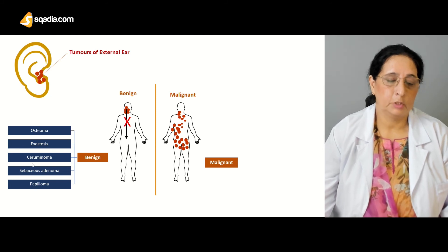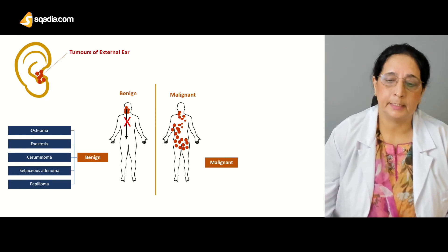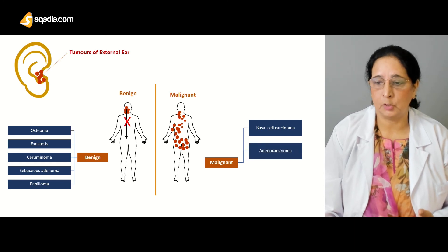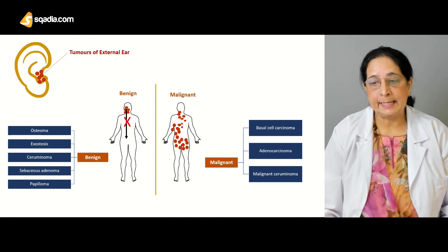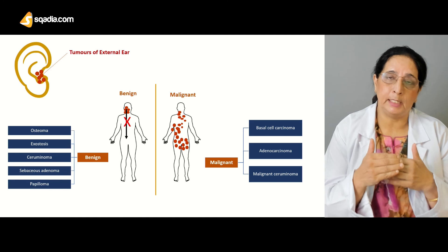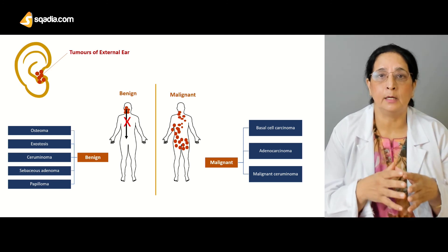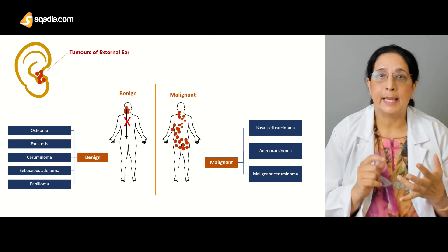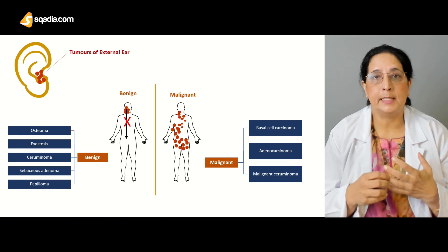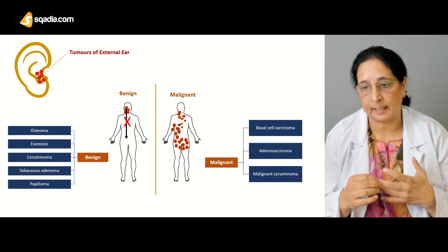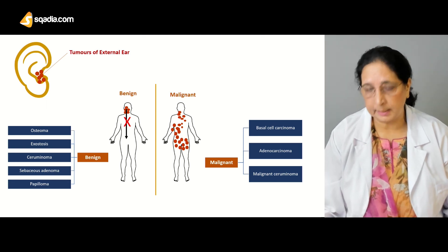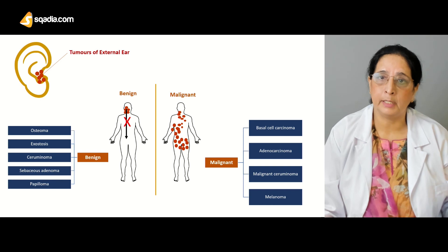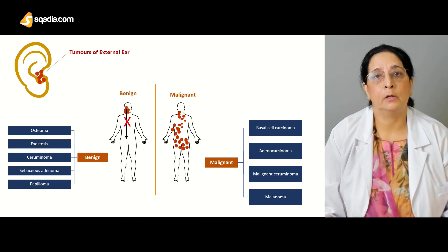The malignant tumors of the external auditory canal include basal cell carcinoma, adenocarcinoma — 'adeno' refers to glands, so this is carcinoma arising from the glands of the external auditory canal — malignant ceruminoma, and melanoma, which can also occur in the external auditory canal as it does in the pinna.